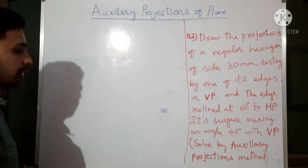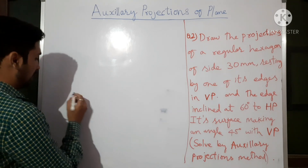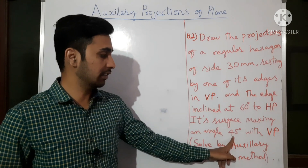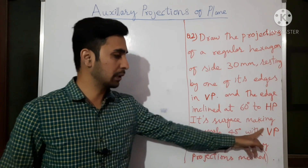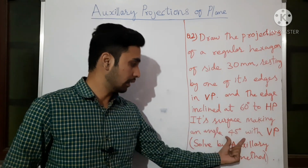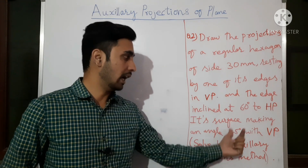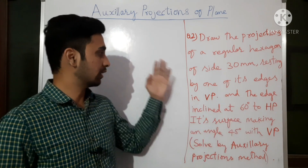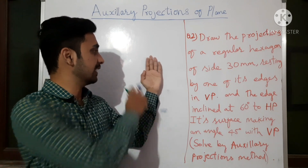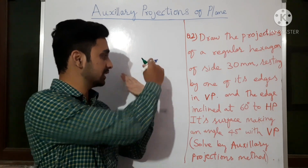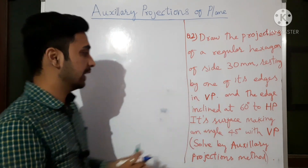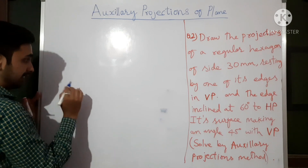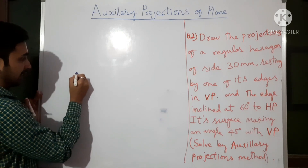Whenever surface inclination is given with respect to VP or HP as a secondary inclination, we assume it as zero, and edge inclination we assume as 90 degrees. Surface inclination zero means the hexagon is straight, and since this is an edge-resting problem the diagram will appear accordingly.